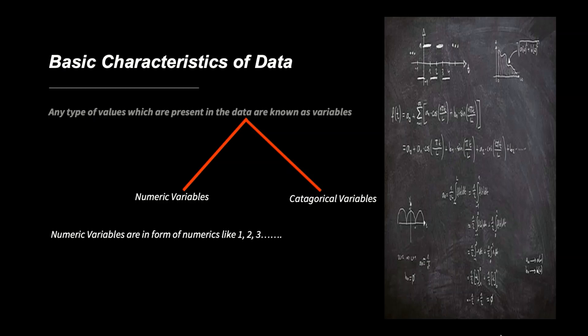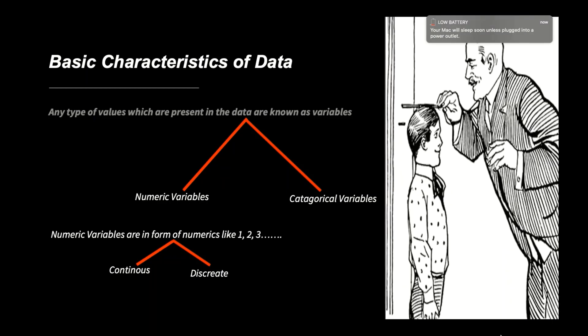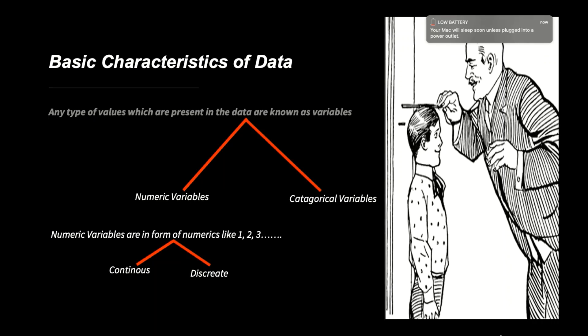We can further classify numeric data into two different types. One type is known as continuous numeric data, while another type is discrete numeric data. The continuous numeric data is basically measurable numeric data, for instance, the height of students or the distance between two cities. It is not mandatory that continuous numeric data is always in whole numbers. This data can be in decimal. For instance, the height of students could be 6 feet or 6.3 feet.